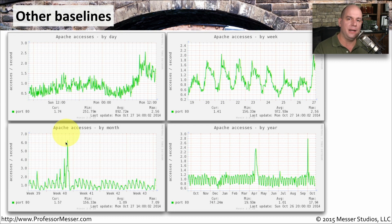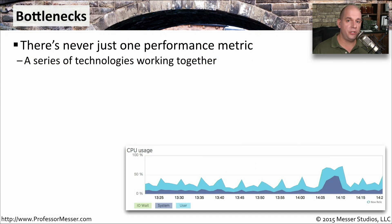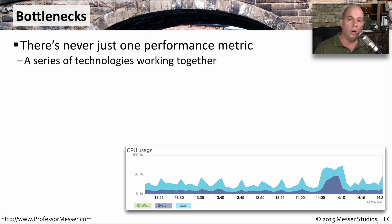By looking at these baselines, I can really get an understanding of how important that might be. If we're going to start making changes to the network or re-engineering parts of our design, then we need to understand where the bottlenecks are. The bottlenecks are going to be associated with many different things. If we look at a network, we have a connection from the internet that's going to run at a particular speed, so there's a bottleneck associated with that. We also have inside of our network switches and routers — those devices can only send traffic at a certain speed. Firewalls and other devices can also have limitations on how much traffic can really go through them.